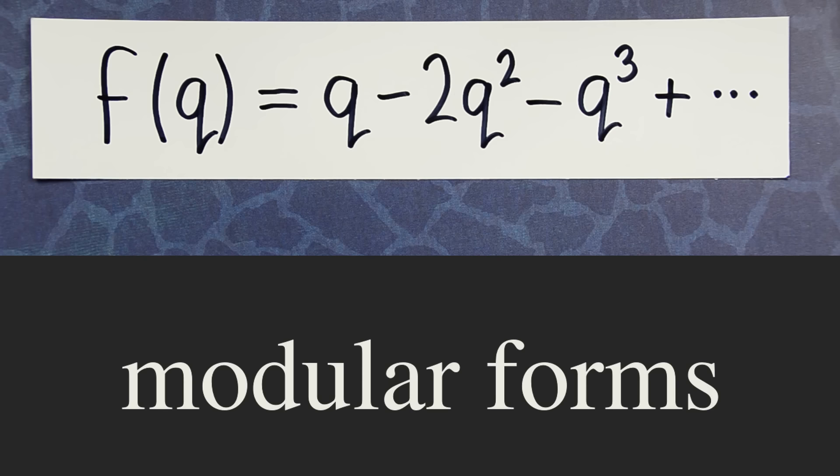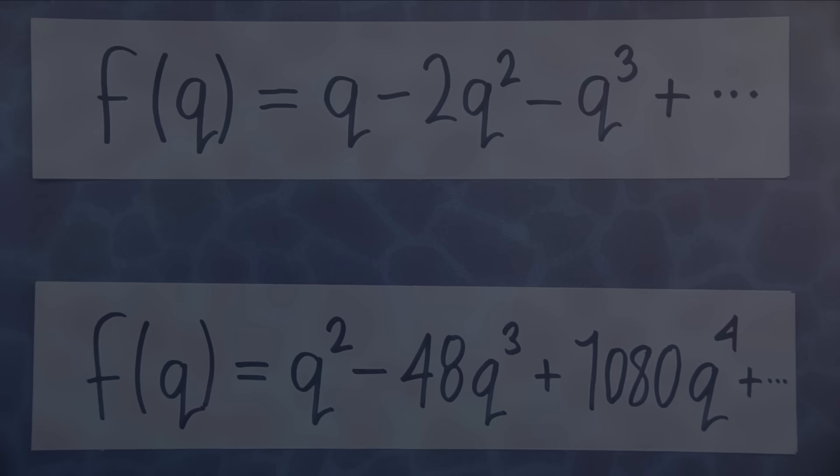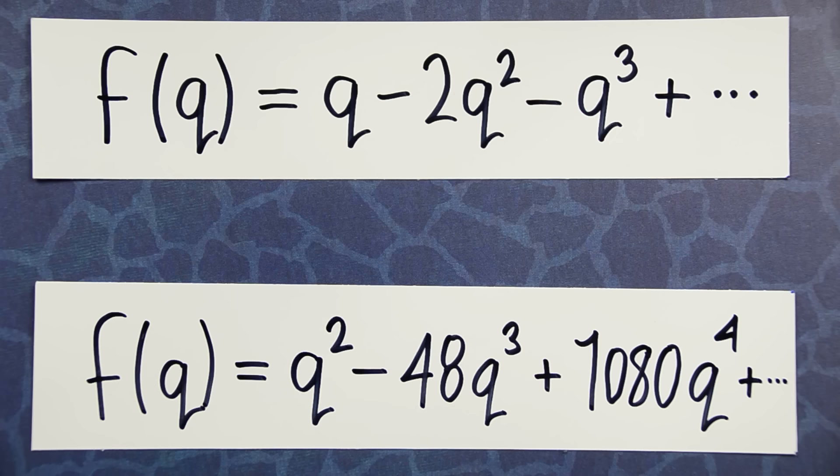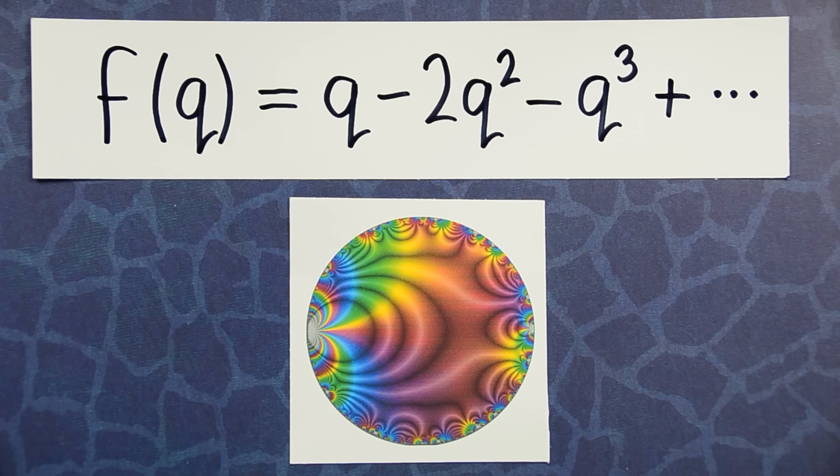For the sake of concreteness, I'll focus on this one here. Our story begins in the 1950s, with mathematicians Martin Eichler and Goro Shimura. They looked at the coefficients of this modular form and wanted to understand their true meaning, so to speak. The first key step was to visualize this function in the complex plane.